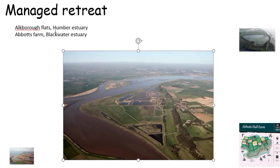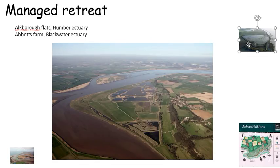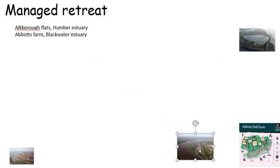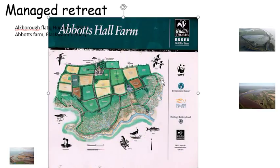This is a photograph of Alkborough Flats. We've got farmland that was set aside to flood. Abbott's Farm was also farmland, and you can see where they've created inlets — got rid of the defences — so the river at high tide can flood this farmland. This area has been set aside to flood.